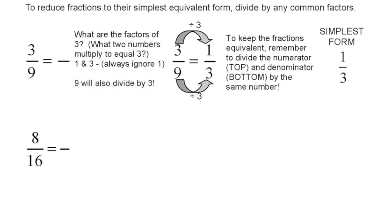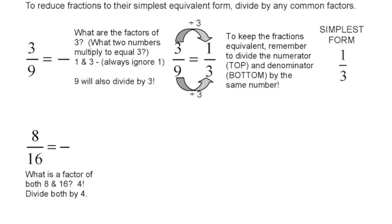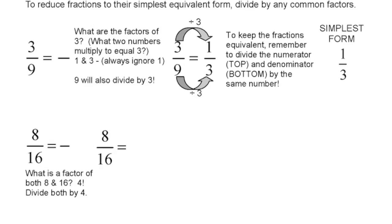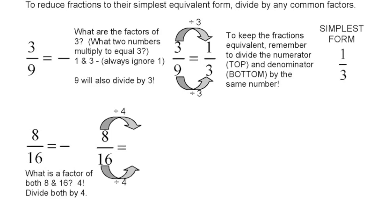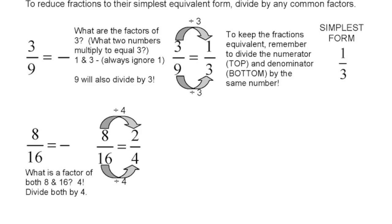So now we'll go down to 8 sixteenths. And so I see down there, what's a factor of both 8 and 16? Well, basically, what can go into both 8 and 16? Well, 4 can. Okay, so let's try 4 into both. So if I do basically 8 divided by 4, and 16 divided by 4, I'm going to end up with 8 divided by 4 is 2, and 16 divided by 4 is 4. Now I have two-fourths. Am I done?